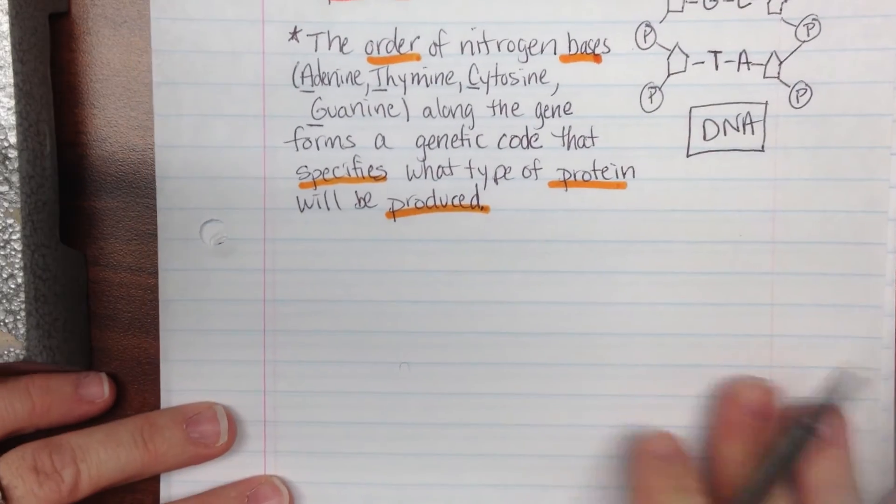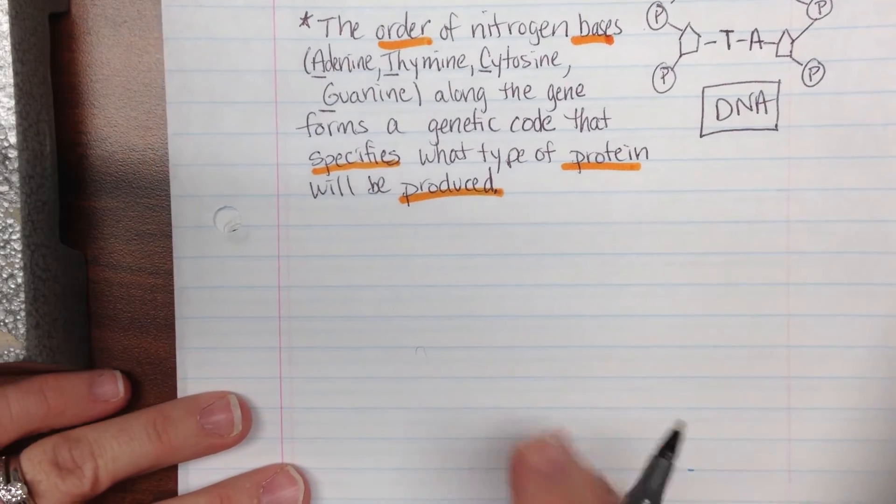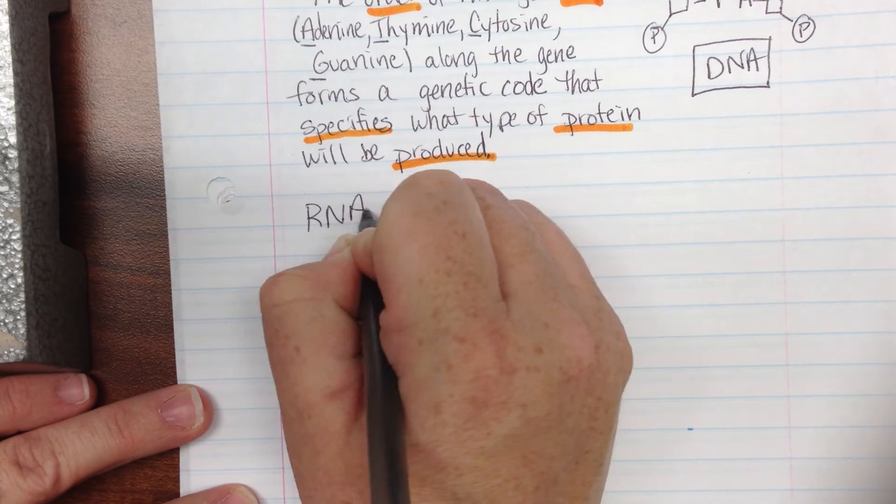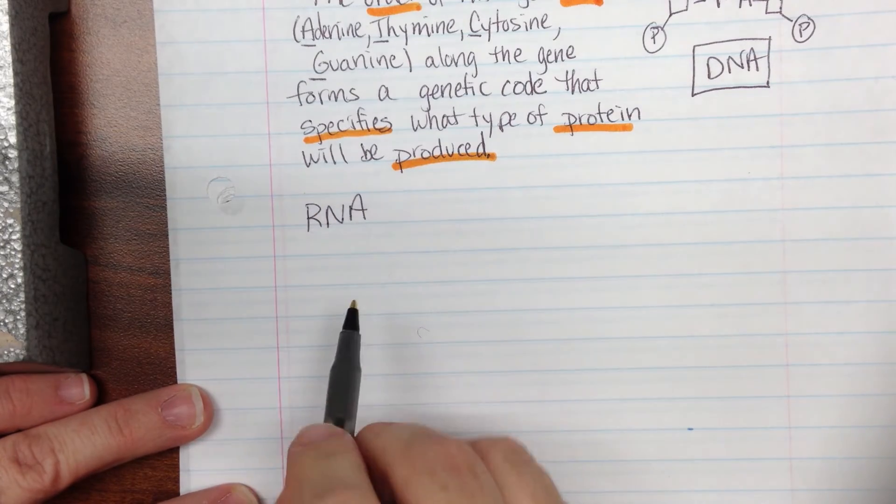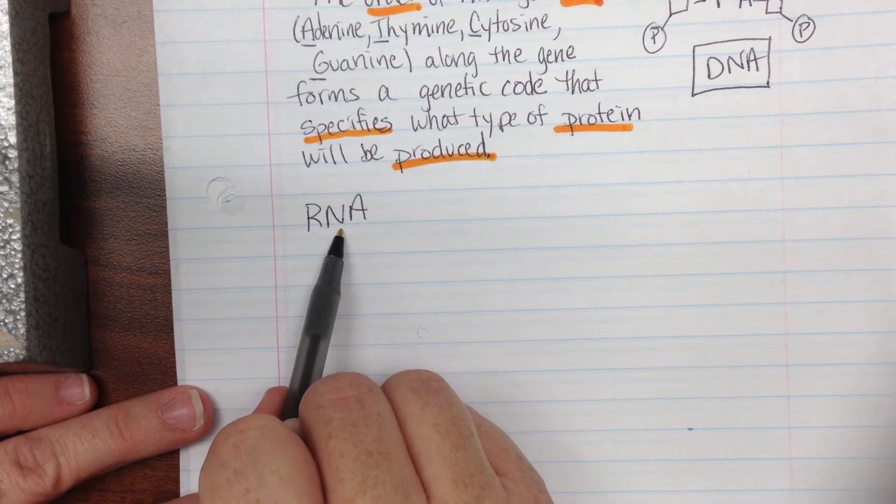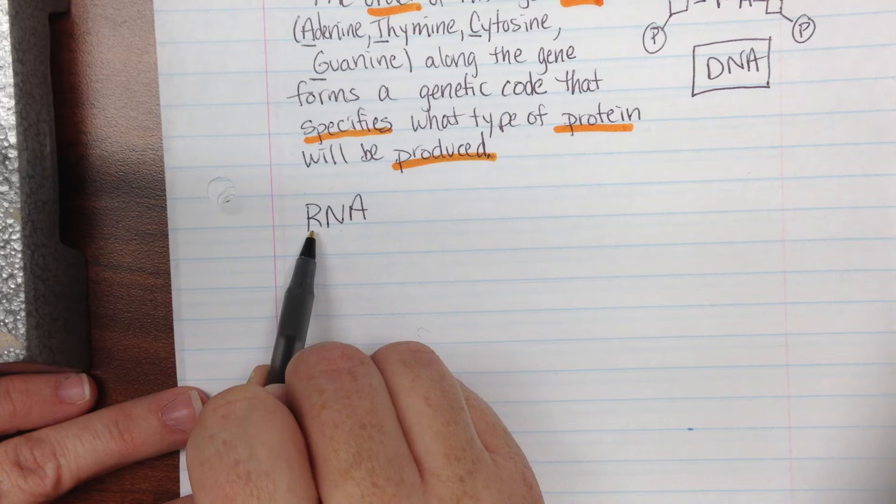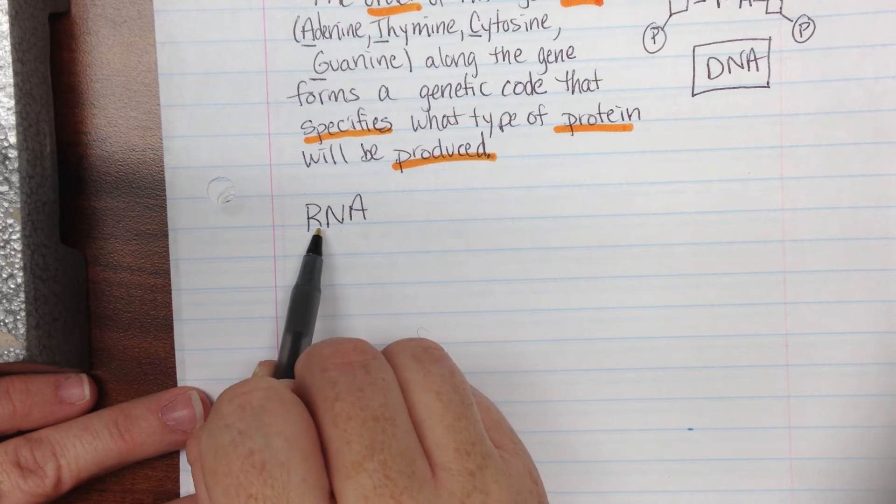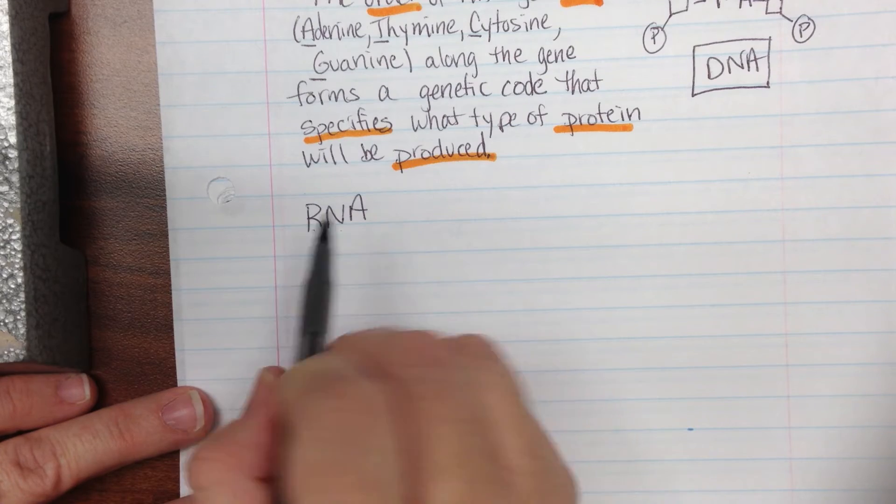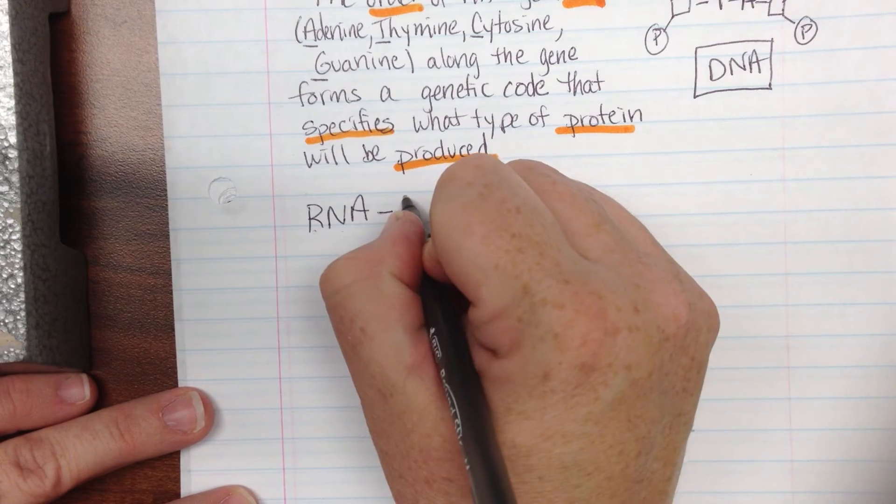All right, another player in our genetic code that is very important is called RNA. It's very similar to DNA in that they are both nucleic acids, but instead of having the sugar deoxyribose, we have the sugar ribose, since we just have an R instead of the D. So RNA stands for...